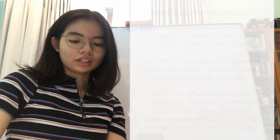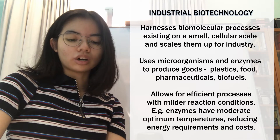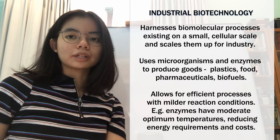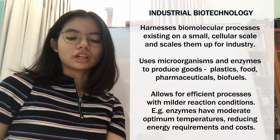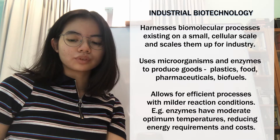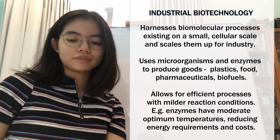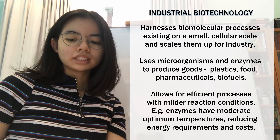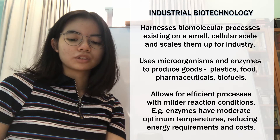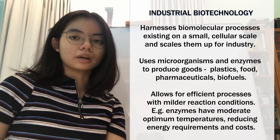The branch that most relates to chemical engineering, or its specialization biochemical engineering, is industrial biotechnology. Industrial biotechnology, also called white biotechnology, harnesses biomolecular processes that already exist on a small cellular scale, and scales them up to make industrial chemical processes more efficient on a large scale. It uses microorganisms and enzymes to produce goods for industry, including plastics, foods, pharmaceuticals, and energy fuels like biofuels, as an alternative to conventional non-microbial approaches.